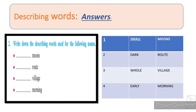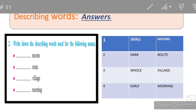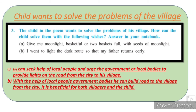Describing words کی activity ہے: 'Write down the describing words used for the following nouns: moon, root, village, morning.' Moon کے ساتھ small moon, big moon, bright moon — اس طریقے سے describing words وہ ہوتے ہیں جو کسی لفظ کی خصوصیت ظاہر کریں۔ Root کے لیے: dark root؛ village کے لیے: whole village؛ morning کے لیے: early morning — یہ poem کے مطابق جوابات ہیں۔